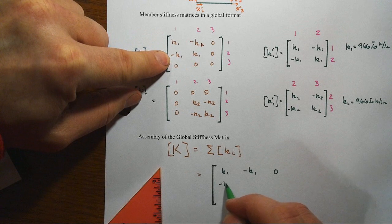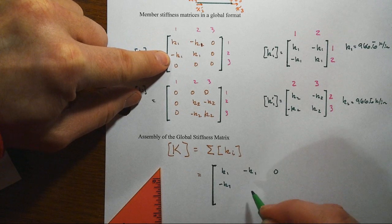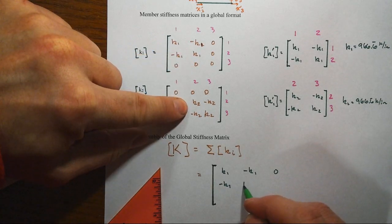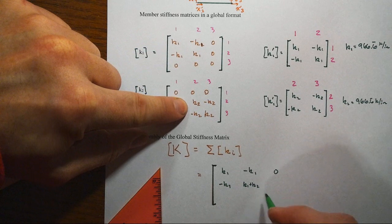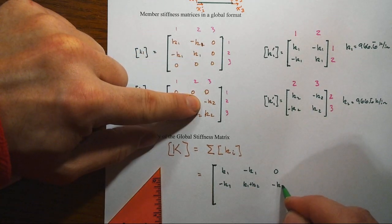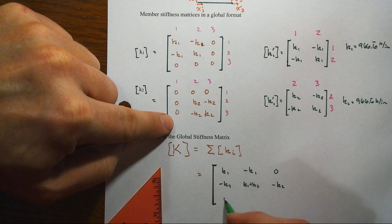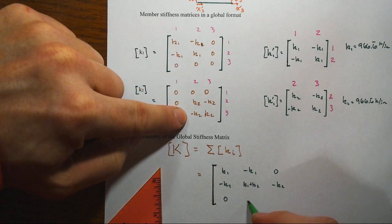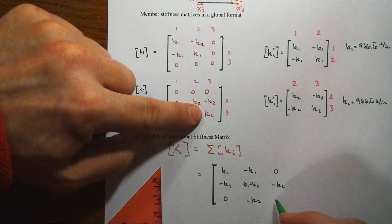Here, second row, minus K1. And then we get a K1 plus a K2. And then we get a zero and a minus K2. And zero plus zero. And zero and then minus K2. And then zero and K2.